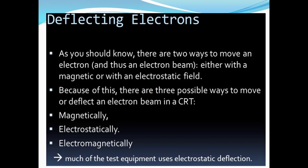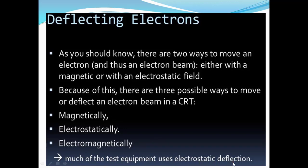The second thing we are talking about is deflection of the electron beam. The electron beam can be deflected in two ways: either with a magnetic or with an electrostatic field. There are three possible ways to move or deflect an electron beam in a cathode ray tube: magnetic deflection, electrostatic deflection, and when used together it is called electromagnetic deflection. Many test equipment uses electrostatic deflection.